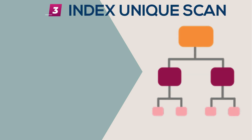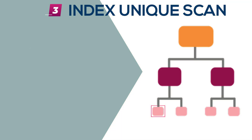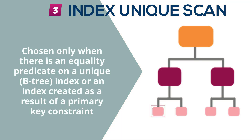An index unique scan is probably the most preferred execution plan. Only one row is guaranteed to be returned by that operation, but it's only going to be used if the table in question has a unique or a primary key index specified on it and we have an equality predicate on that primary key or unique key. That will give an index unique scan.